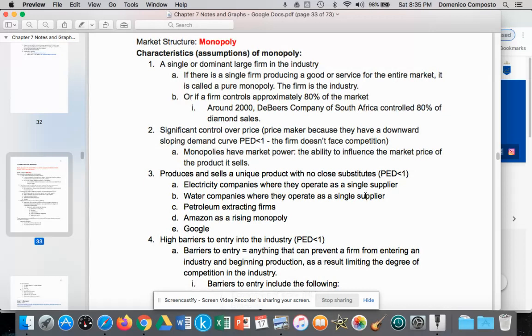We assume in this market structure that we're dealing with a single or dominant large firm within the industry. If there's a single firm producing a good or service for the entire market, it's called a pure monopoly. Thus, the firm is the industry, or if a firm controls about 80% of the market, it's also considered a monopoly.